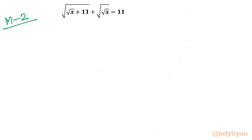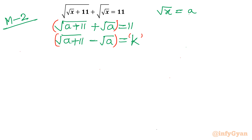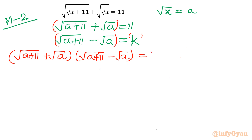Now Method 2, called the method of algebraic manipulation. Again I consider square root of x equal to a, so the equation is square root of (a plus 11) plus square root of a equals 11. I will presume the difference between the two radicals: square root of (a plus 11) minus square root of a equals k, an unknown, and multiply both equations together.